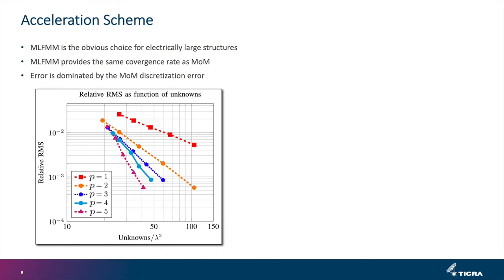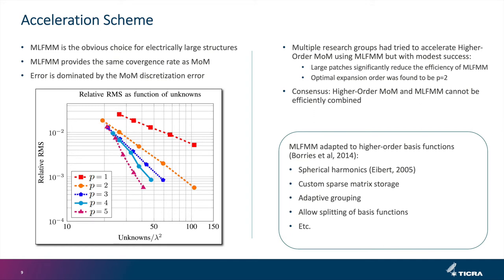We need to accelerate the solution and MLFMM is the obvious choice for electrically large structures. Once you fine-tune the MLFMM parameters, the error is completely dominated by the MOM discretization error. However, applying MLFMM on top of high order basis functions doesn't necessarily yield a more efficient code, because the large patches limit MLFMM efficiency. Many research groups found that the optimal order was only second order.